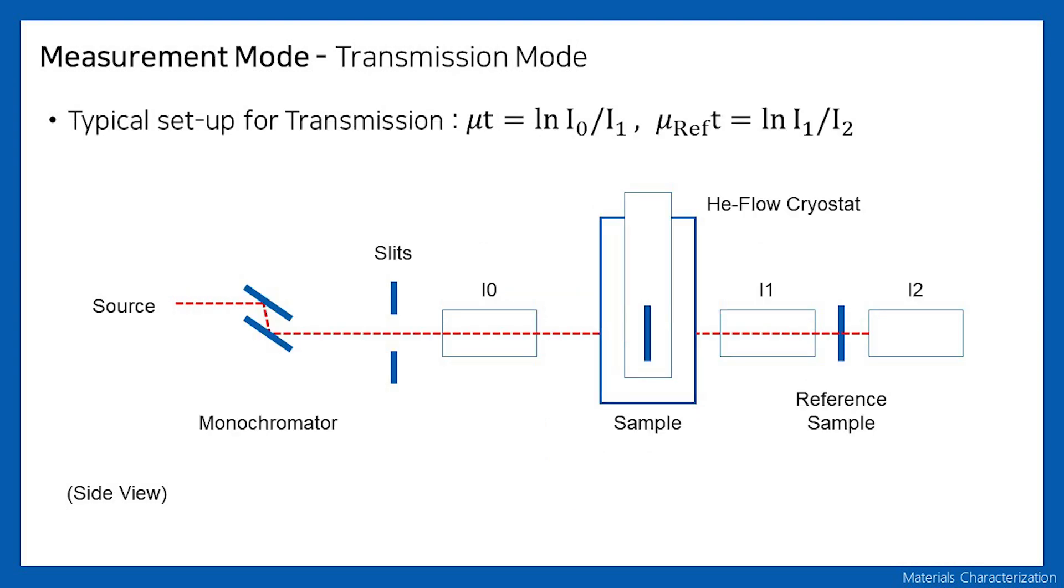The following figure is the experimental setup of transmission mode. It is almost the same as the previous slide, and the reason for the reference sample is also to normalize. The transmission mode, which is the most common, analyzes the energy of the transmitted beam through the sample. Because forward scattering has the highest intensity, the transmitted beam also has the highest intensity of all, which is an advantage of this analysis. In this case, we use data from I0, I1, and I2 for the sample and reference.